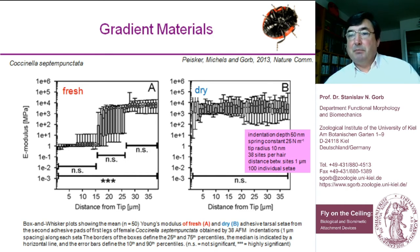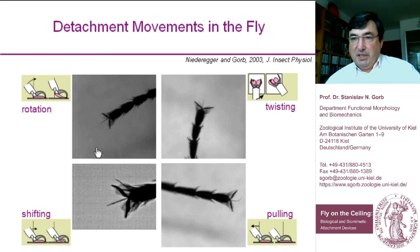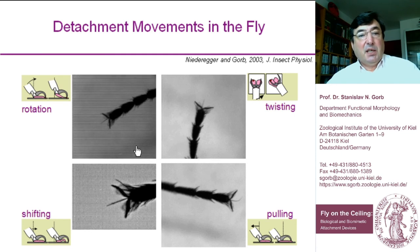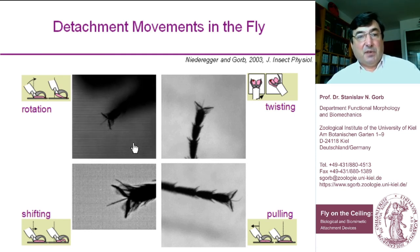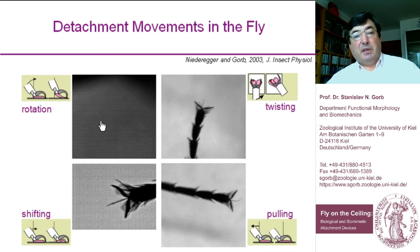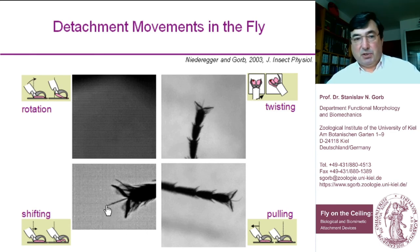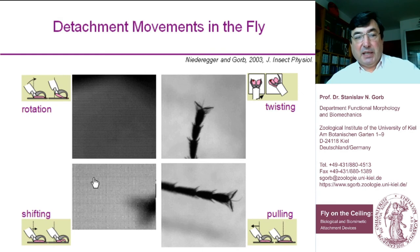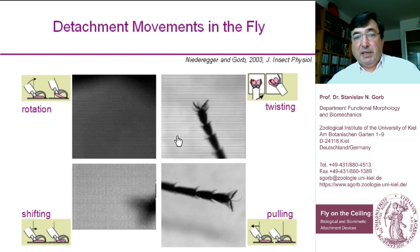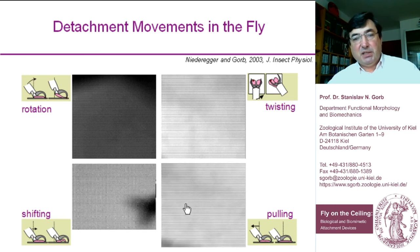If everything sticks so well and we understand the principle of adhesion, the question is how animals detach from the surface — and there are several possibilities. In the case of the fly, they can use claws to lever out the pulvilli — like peeling at a global scale, similar to how we detach scotch tape. Animals can also shift the leg forward, performing peeling at the local scale at the level of every single hair. Sometimes they twist the hairs, allowing very quick detachment, and in some situations they pull in the direction of highest force.